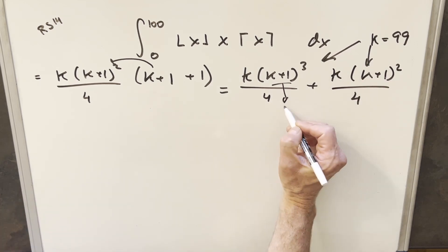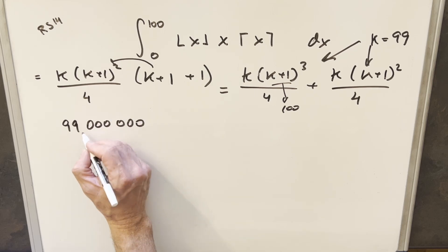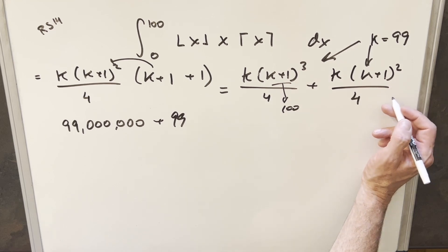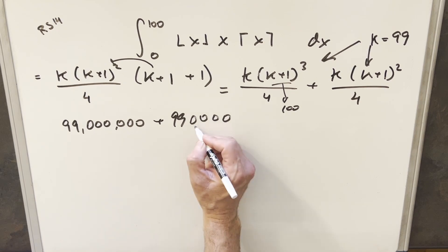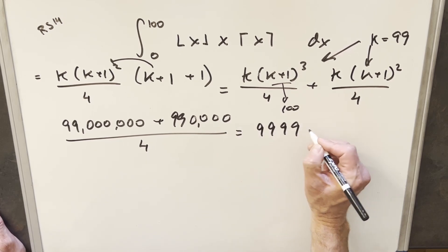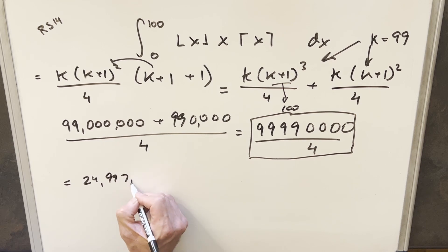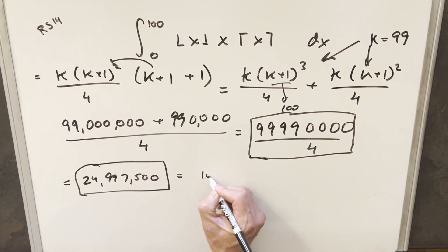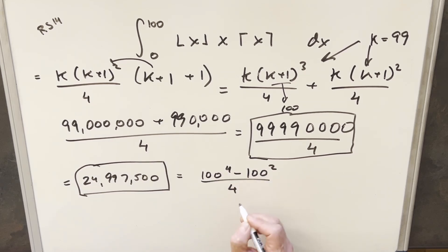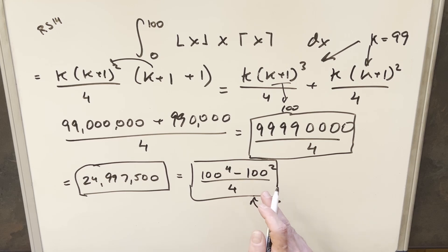Plugging back in with k equals 99, k plus 1 is 100. So 100 cubed is a million, times 99 out front gives 99 million. For the other term, we have 99 times 100 squared, which is 10,000, giving 990,000. This is all over 4. Adding these together gives 99,990,000 over 4, which equals 24,997,500. MIT's answer key expressed it as 100 to the 4th minus 100 squared, all over 4 — these are all equal. One difference is if you sum from 1 to 100 instead of 0 to 99, it's more convenient to arrive at MIT's form, but either way the value is the same.